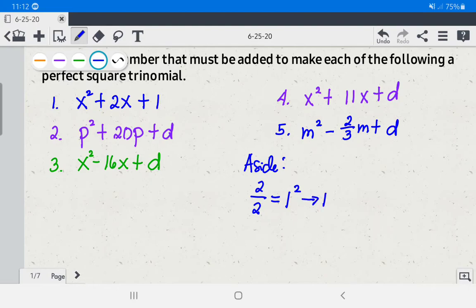You add 1 here. Therefore, it is now a perfect square trinomial. We have x squared plus 2x plus 1. Next, letter number 2.